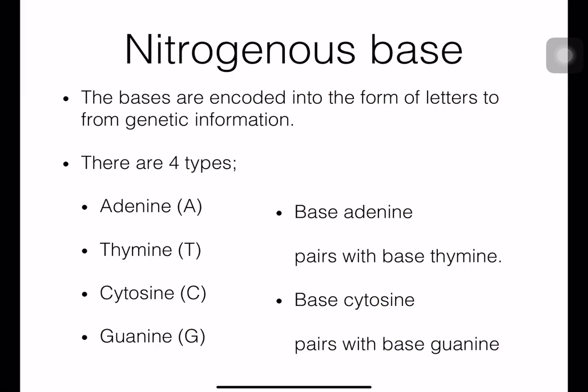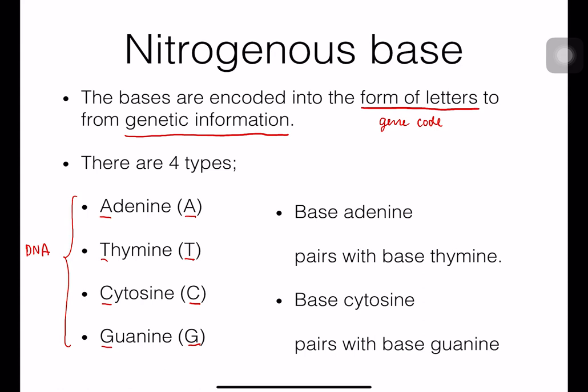The nitrogenous bases are encoded into the form of letters, representing the genetic code and the genetic information. We have four types: adenine (A), thymine (T), cytosine (C), and guanine (G). These occur in DNA. However, if you are talking about RNA, you need to change the base T (thymine) into uracil (U), because thymine occurs in DNA only and uracil occurs in RNA only.